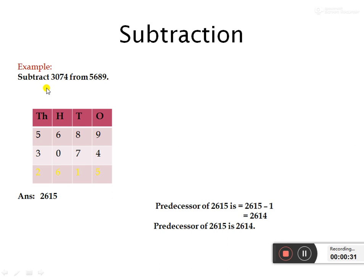When you do the subtraction, first we have to write the bigger number first. Which number is the bigger number — 3 or 5? Yes, 5 is the bigger number, so 5689 we have to write first, then 3074. We have to start from the ones place. 9 minus 4 is 5, 8 minus 7 is 1, 6 minus 0 is 6, 5 minus 3 is 2. Answer is 2615.